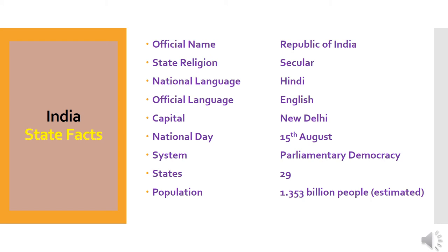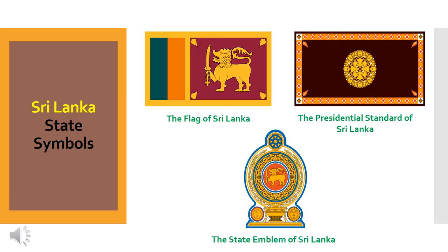Here are some facts about India. Official name: Republic of India. State religion: secular. National language: Hindi. Official language: English. Capital: New Delhi. National day: 15th August. System: parliamentary democracy. States: 29. Population: 1.353 billion people, estimated.